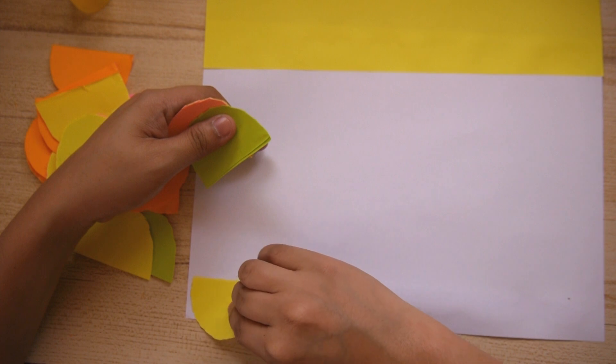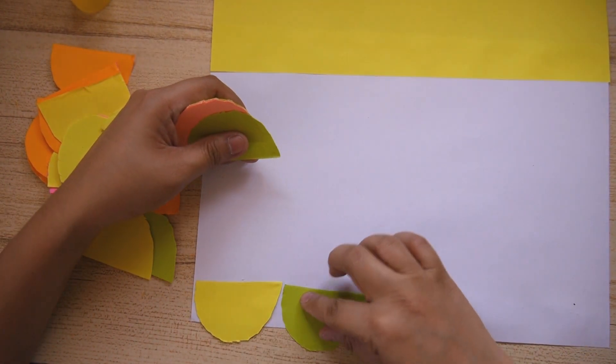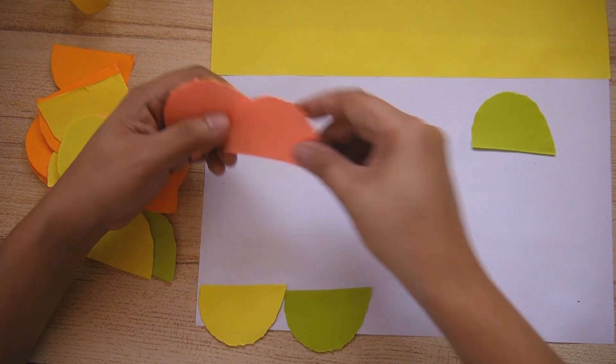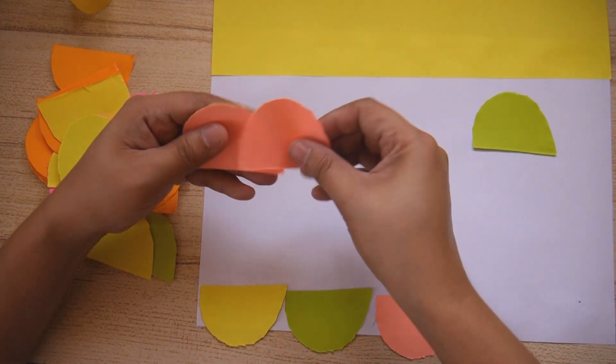I am doing alternate colors instead of one row of the same colors, but it's up to you how you want to present your fish kite.